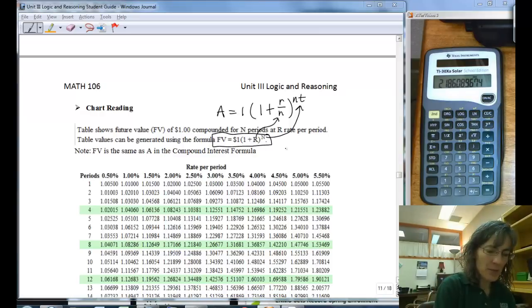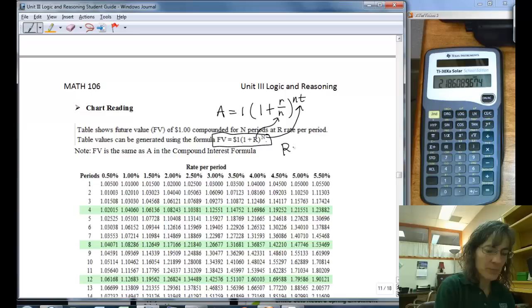That's what we're calling the big R, and that's going to be your little r over n, and then the big N, which is going to be your little n times your little t.